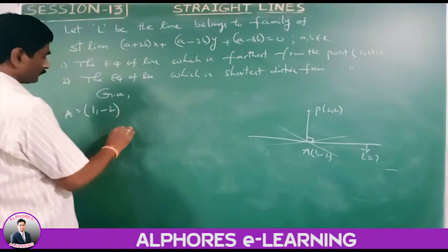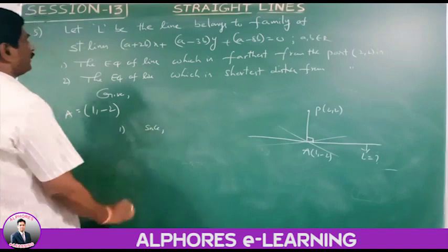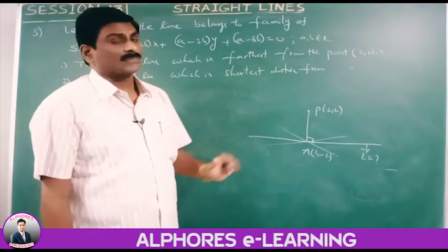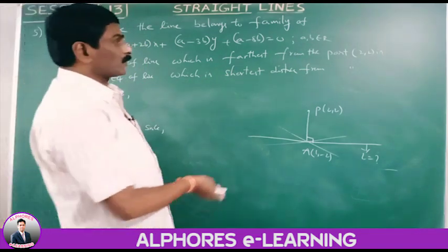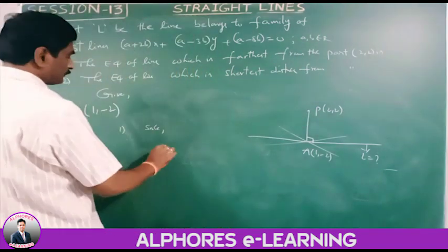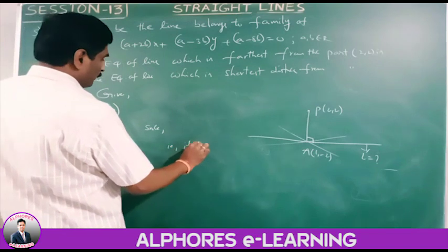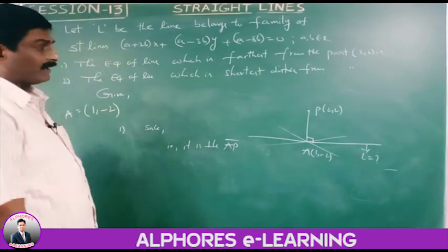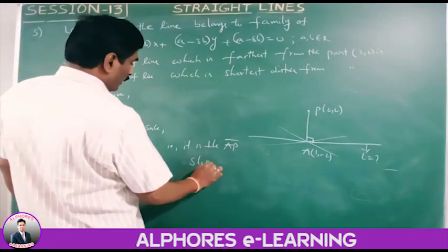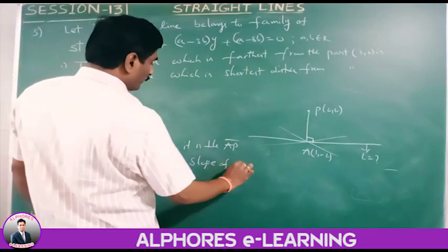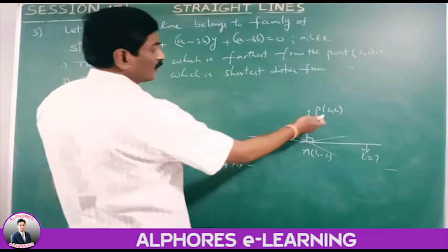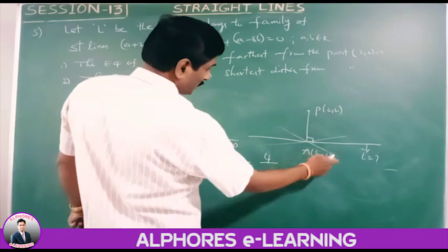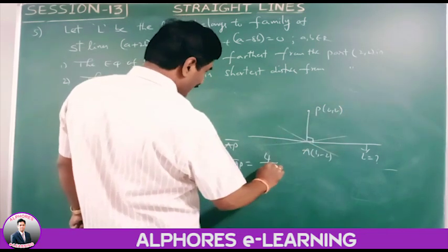Since the required line is farthest from point P(2, 2), it is perpendicular to the line AP. The slope of AP equals (y2 minus y1)/(x2 minus x1) equals (2 minus (minus2))/(2 minus 1) equals 4/1 equals 4.